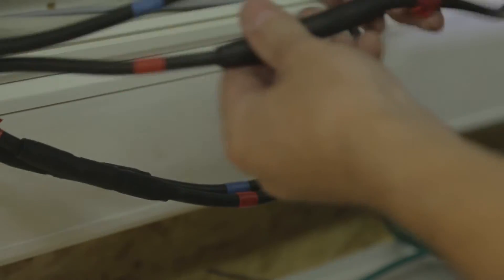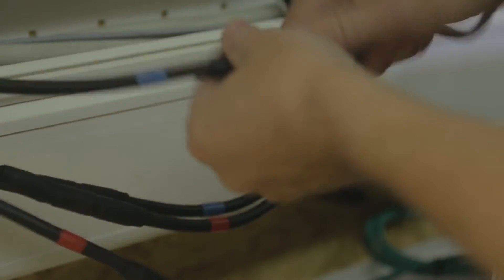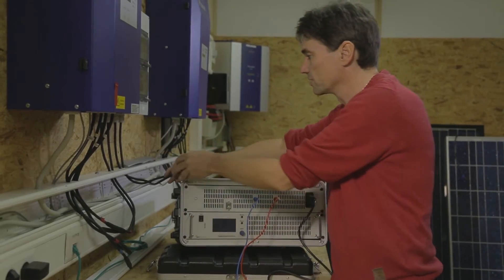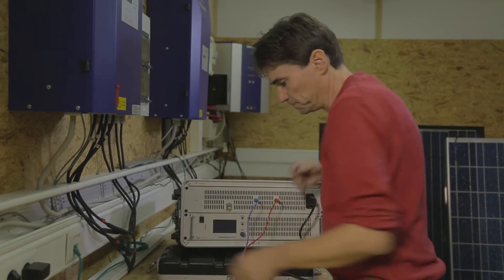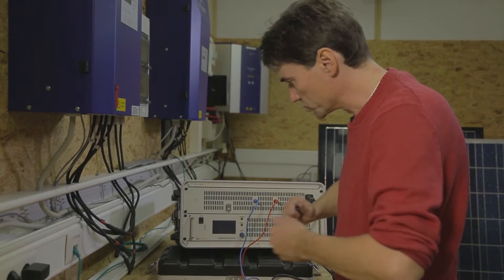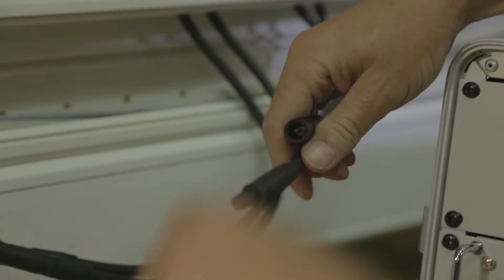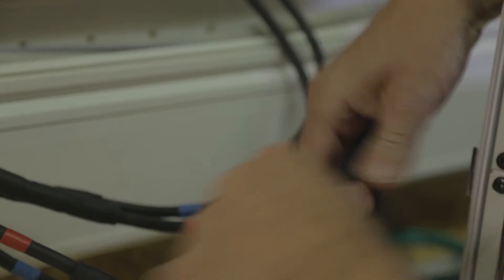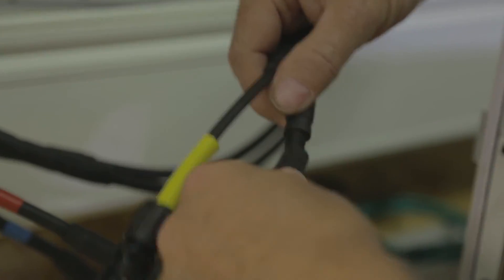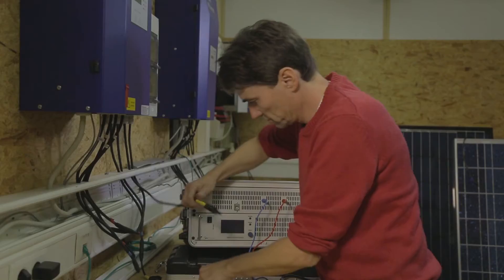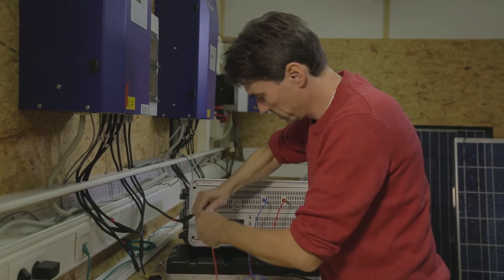This photovoltaic array still has the old MC3 multi-contact plugs. I'm now going to disconnect this string from the inverter, so I can send current back through it. To do so, I'm going to use the adapter that connects MC3 to MC4. I connect the solar array string to PVServe, which will send current back through the array.